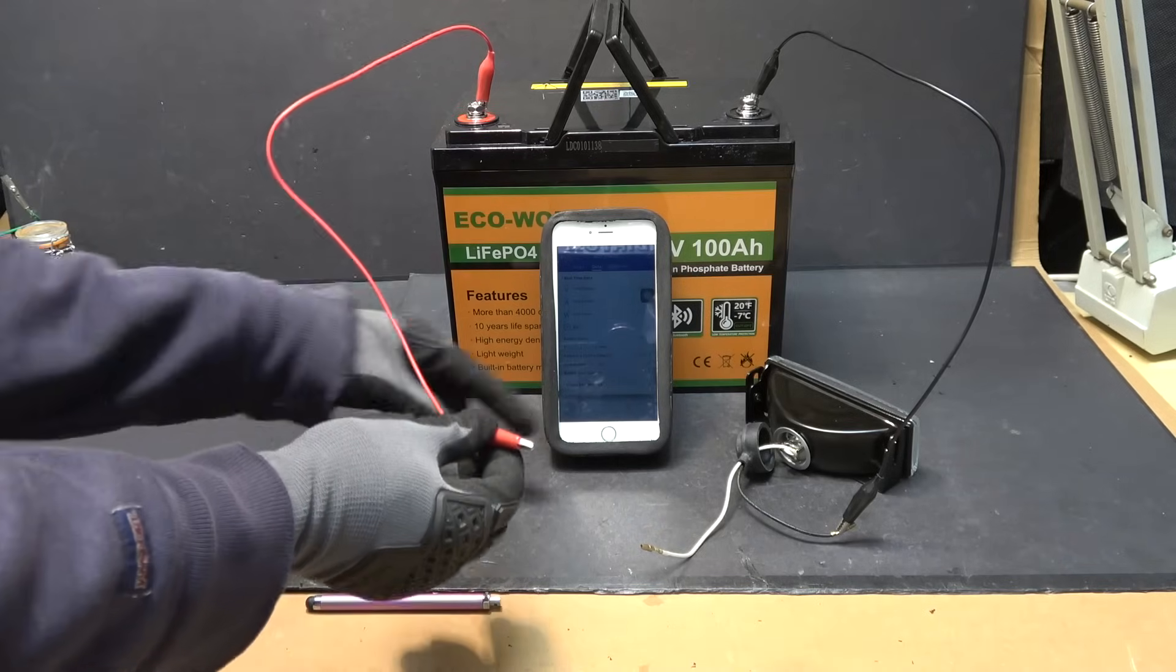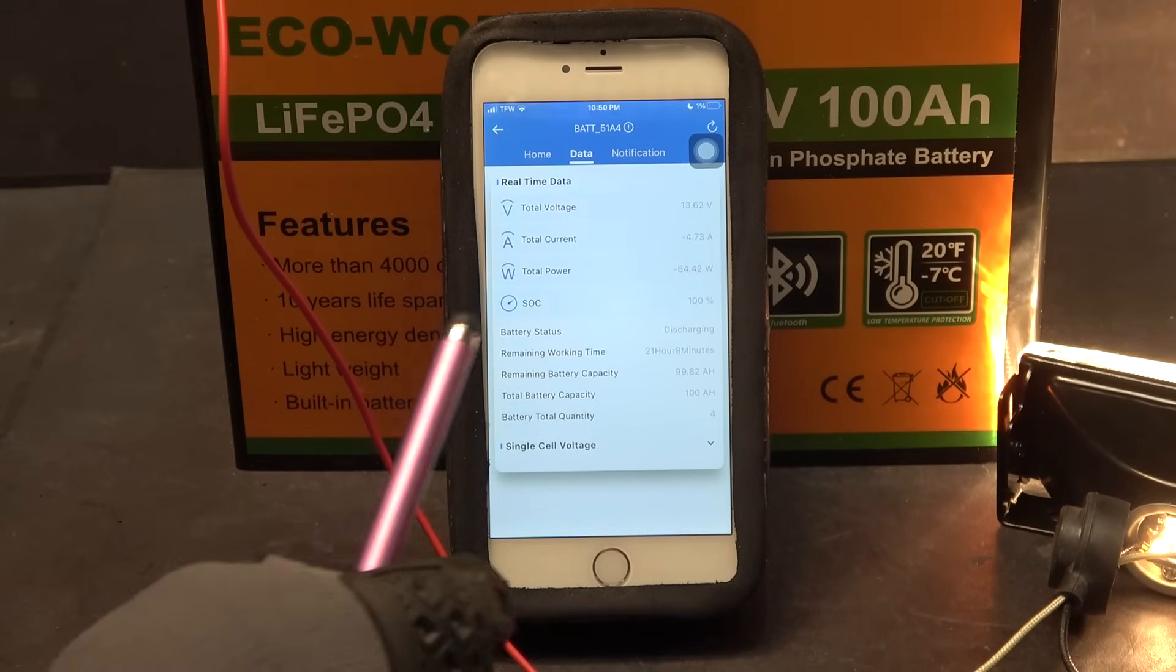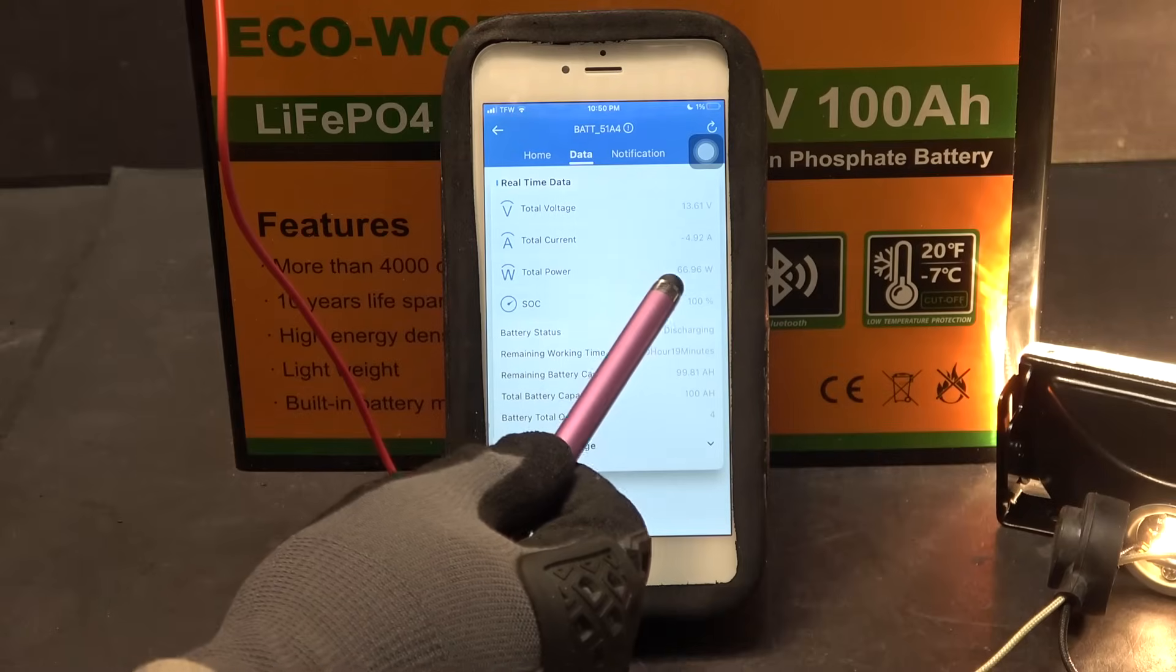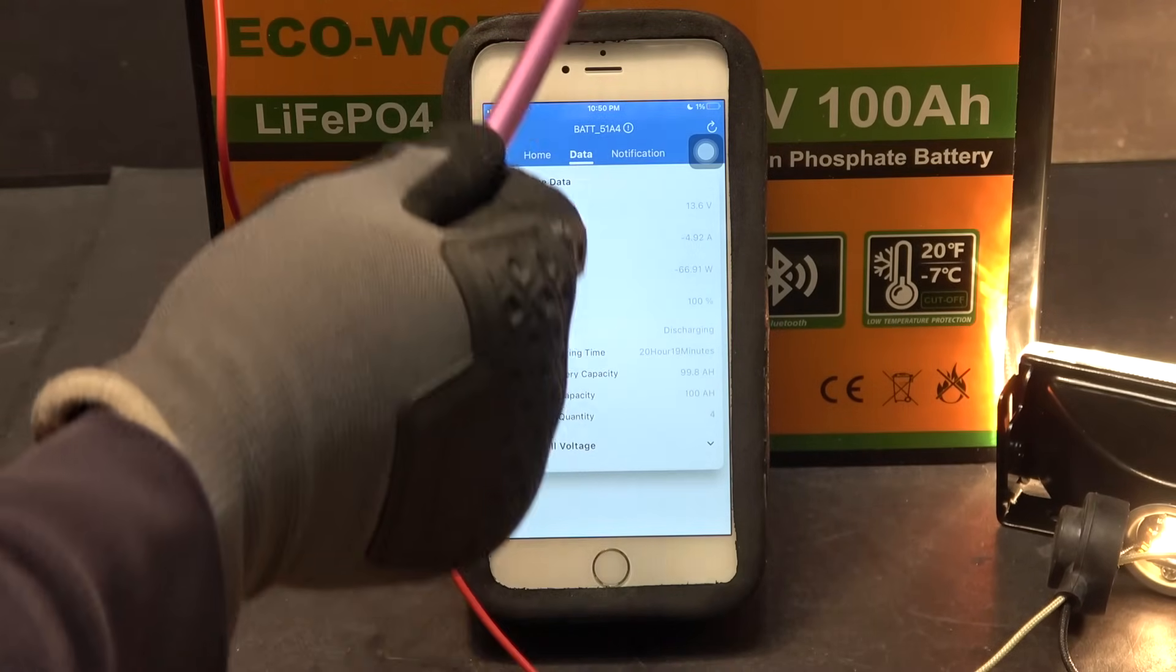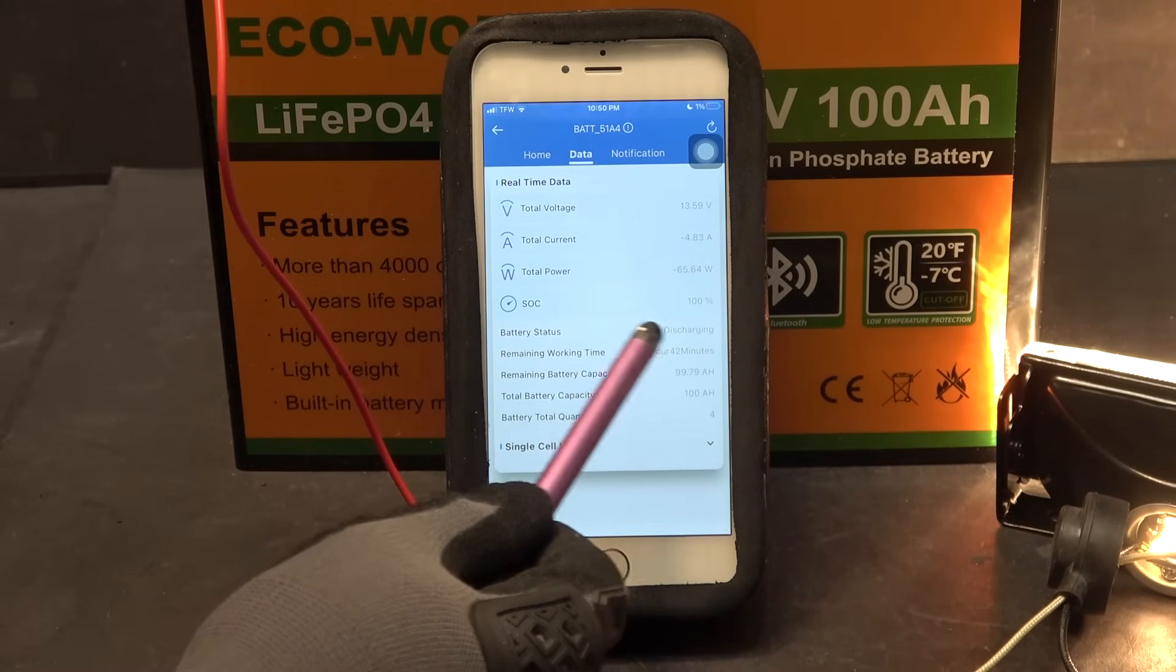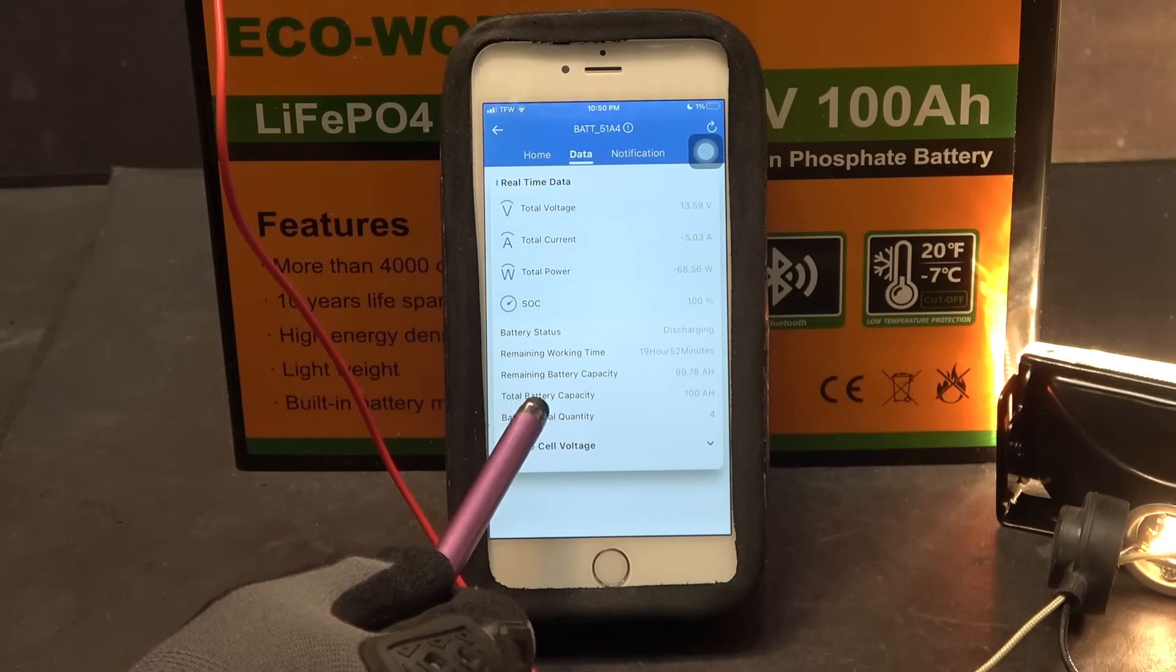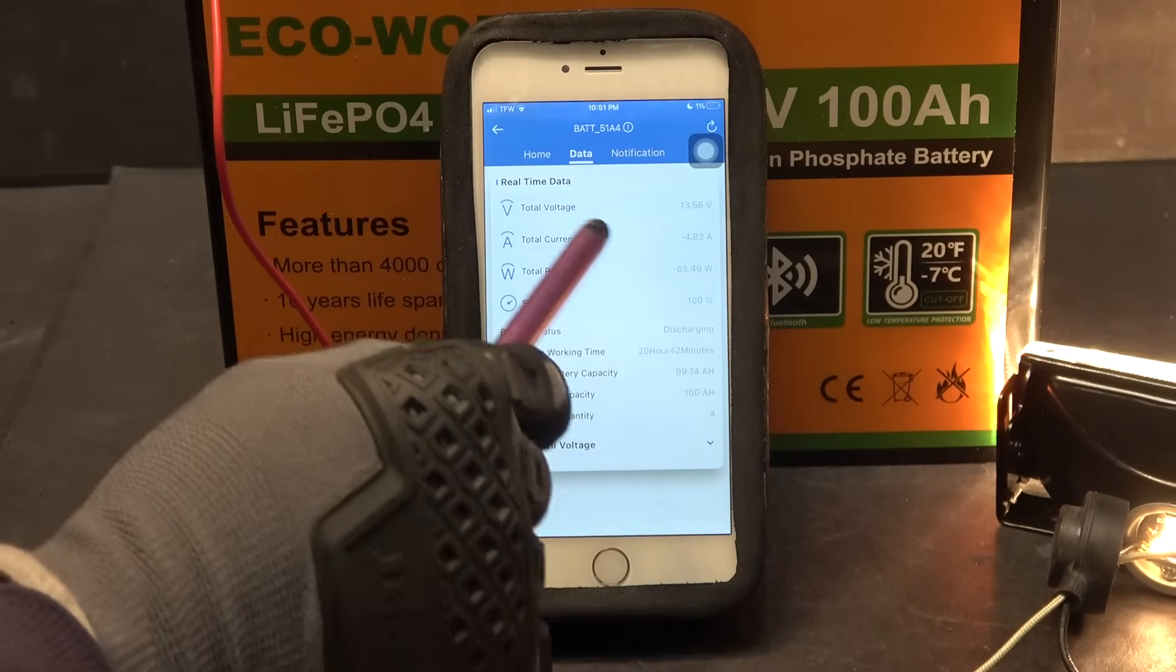I'm going to connect a 12 volt light bulb to the battery and see what we got. Here you can see it's showing total current minus 4.9 amps. Total power minus 66 watts, and that's because the battery is discharging. And down here you can see the battery status discharging. Remaining working time 20 hours and battery capacity. It will show you in real time the discharge data.